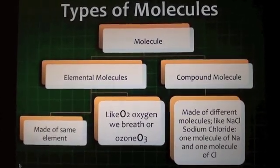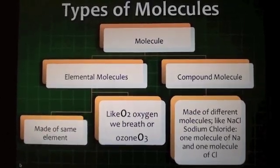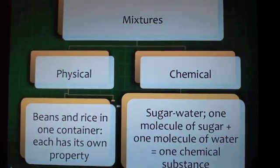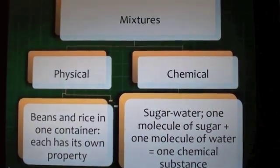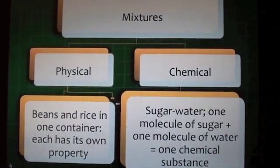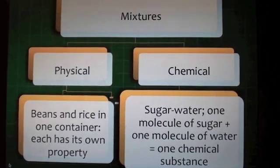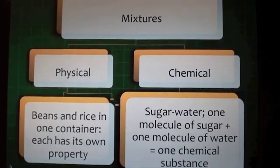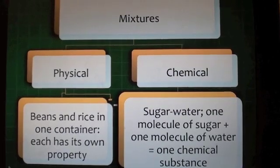Compound molecules are made of different molecules, like sodium chloride — one molecule of sodium and one molecule of chloride. Mixtures can be physical or chemical. Physical mixtures are like beans and rice in one container; each retains its own property. Chemical mixtures are like sugar water — one molecule of sugar plus one molecule of water equals one chemical substance, and you cannot see the individual sugar or water molecules.